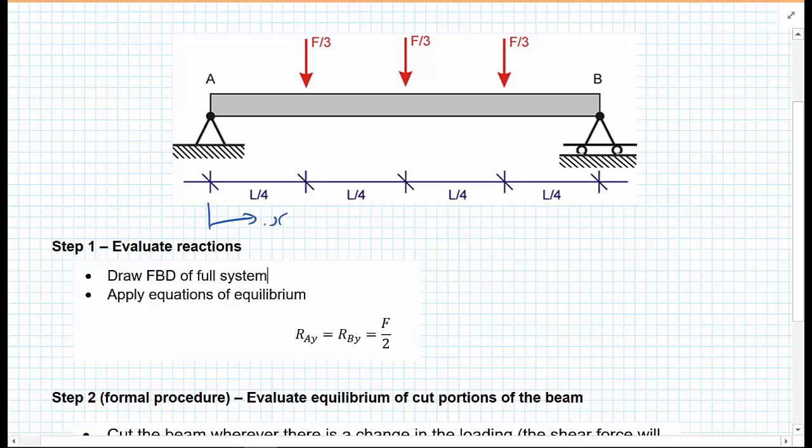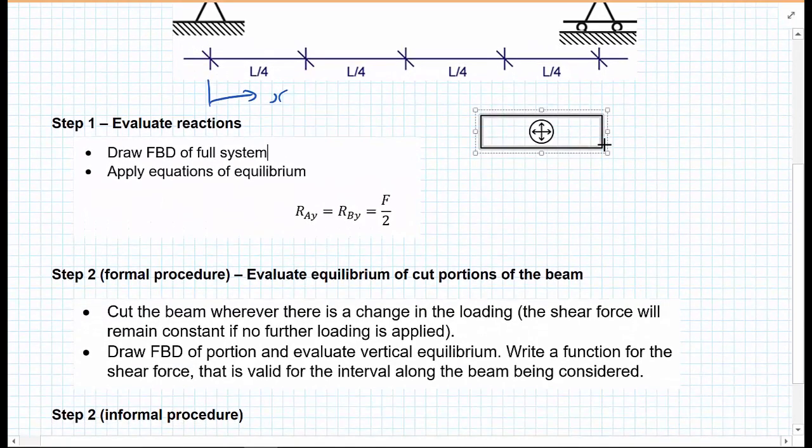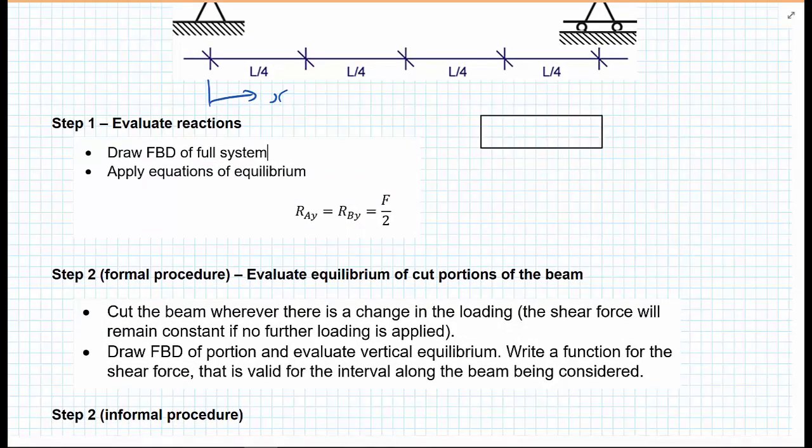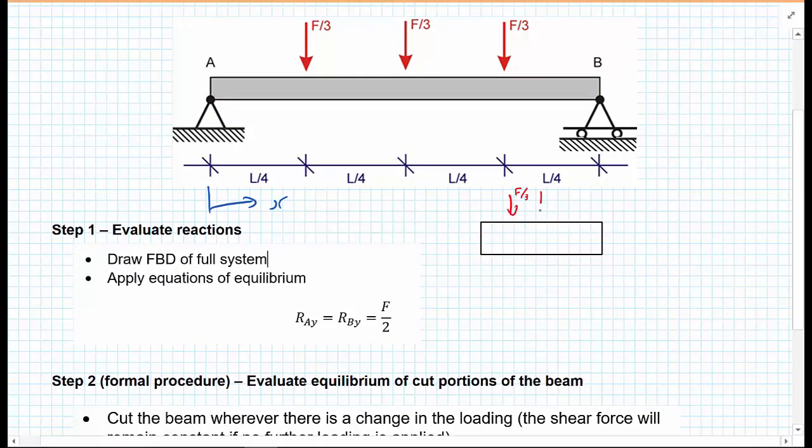As the previous example, we need to evaluate the reactions. So to calculate reactions, we need to draw the free body diagram of the full system. So we have the free body diagram of the full system. And let's put the loads on there. So we have F upon 3, F upon 3, F upon 3. And we have R_AY, R_BY. We're only considering the Y direction.